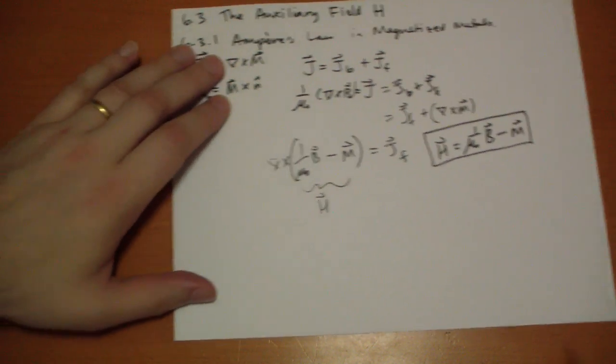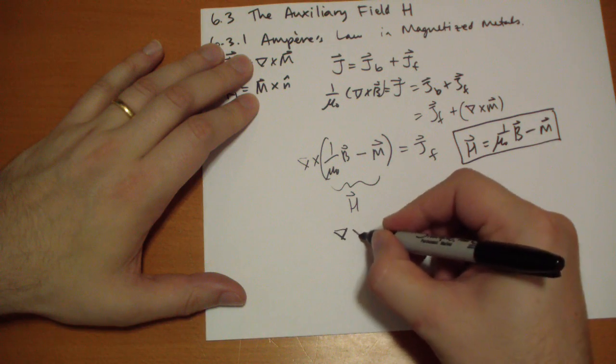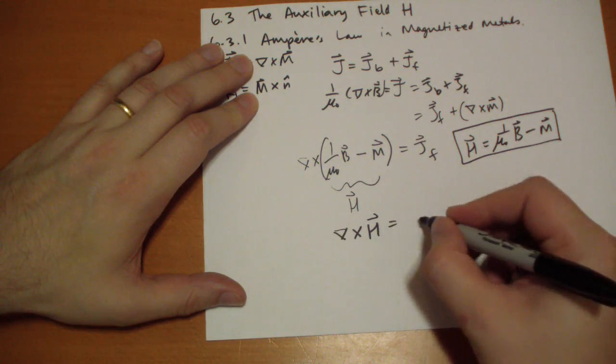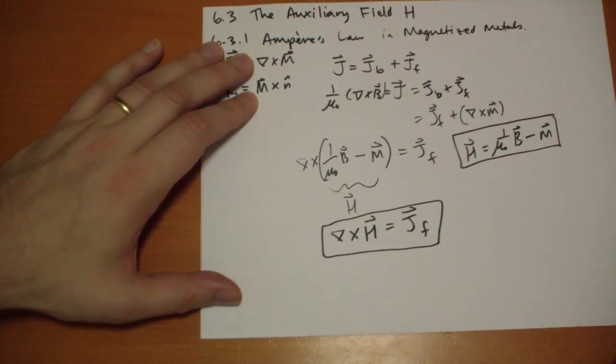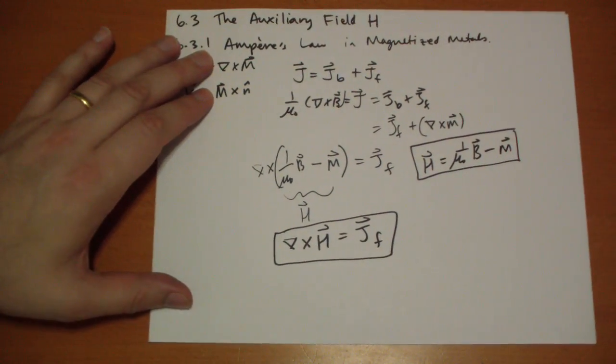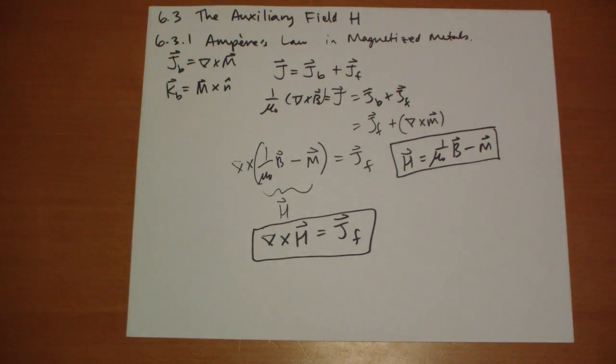Ampere's Law for H simply states that the curl of the auxiliary field H is equal to the free current that was introduced into the system, ignoring the bound current caused by the magnetization of the material.